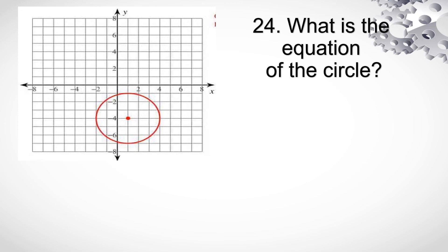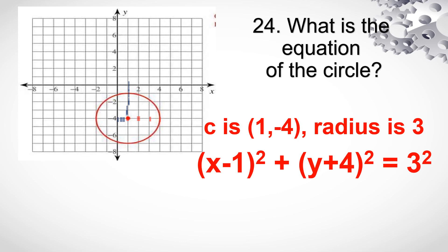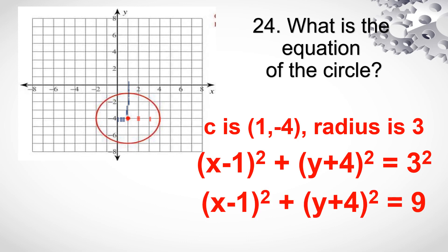Number 24. What's the equation of the circle? Hanapin nyo muna yung location ng center — siya ay nandito sa (1, -4). At yung radius niya — from the center — ay 1, 2, 3 units. So radius is 3. Gamit yung ating equation or yung formula, x minus h squared plus y minus k squared is equal to r squared. Evaluate yung 3 squared. So yung equation of the circle is the quantity of x minus 1 squared plus the quantity of y plus 4 squared is equal to 9.